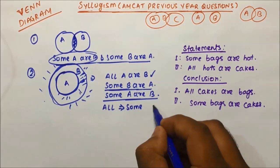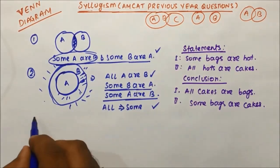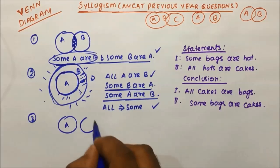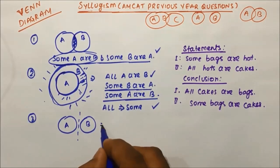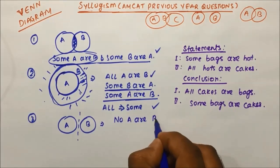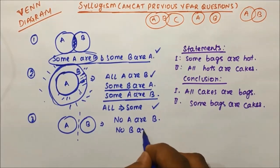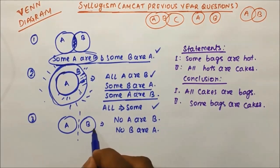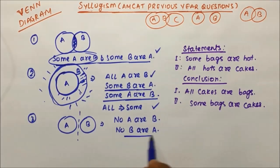From diagram two we conclude: if all A are B, then you can also say some A are B and some B are A. Now the third diagram — suppose this is A and this is B with no relation between them. You can say 'no A are B' and also 'no B are A,' because there is no relation from A to B or B to A.